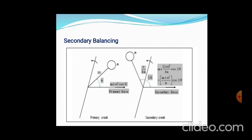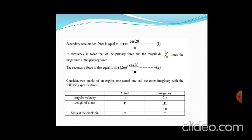Secondary balancing is quite straightforward — except R is replaced by R/(4N), giving M·R·(2ω)²/(4N)·cos2θ = M·R·ω²/N·cos2θ. The secondary acceleration force equals M·R·ω²·cos2θ/N. Its frequency is twice that of the primary force, and its magnitude is 1/N times the magnitude of the primary force. Consider two cranks of the engine: one actual with angular velocity ω and crank length R, and one imaginary with angular velocity 2ω, crank length R/(4N), and mass M at the crank pin.